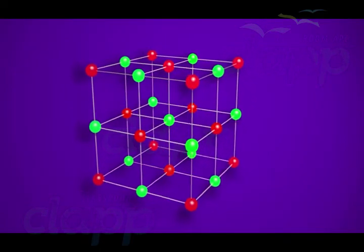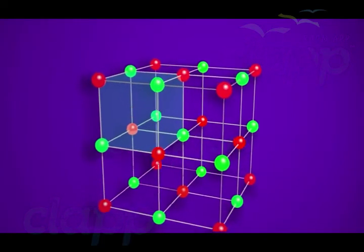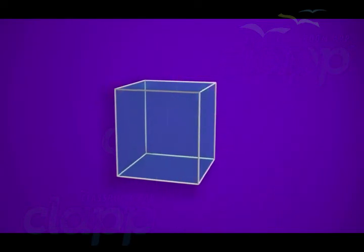The smallest portion of a crystal lattice is called a unit cell. An entire crystal lattice can be built when these unit cells are repeated in different directions.